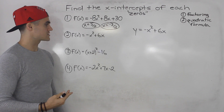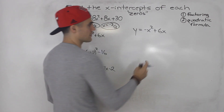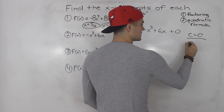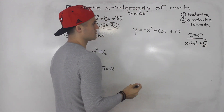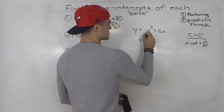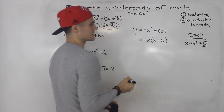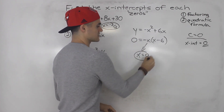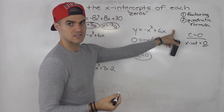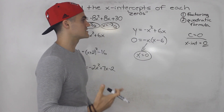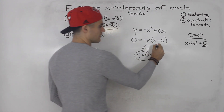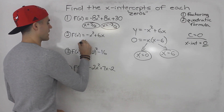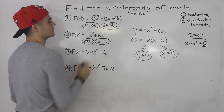Moving on to number 2, we have negative x squared plus 6x. Notice there's no c-value — the c-value is 0. Whenever the c-value is 0, you always know that one of the x-intercepts is going to be 0. It's super easy to factor: just take out a negative x, leaving x minus 6. So when there's no c-value, you can always take out an x, and one of the x-intercepts is always going to be 0. The other one here is x equals 6. So x-intercepts are x equals 0 and x equals 6.